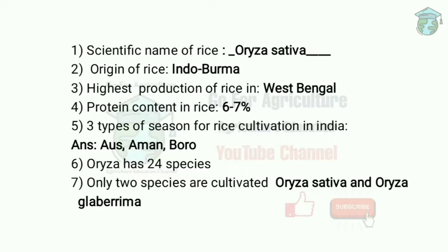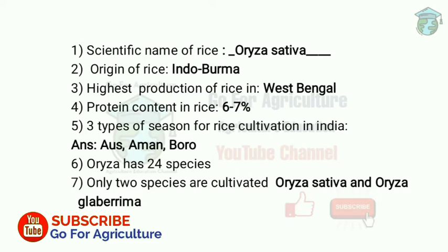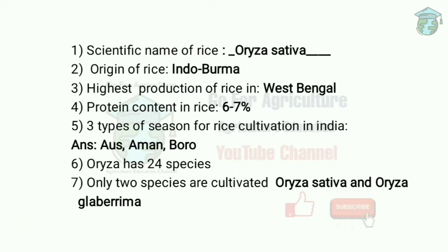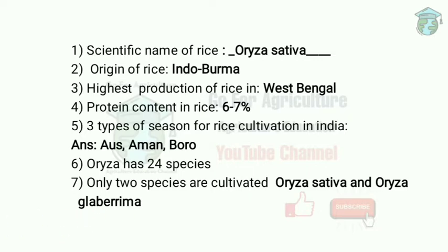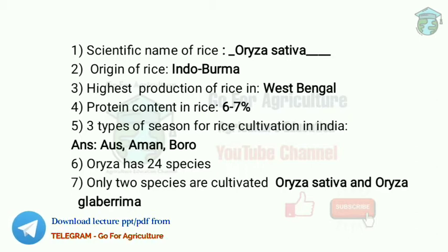Protein content in rice is 6 to 7 percent. Next question: what are the three types of season for rice cultivation in India? They are Aus, Aman, and Boro. Aus means autumn — the rice harvested in autumn. Aman means winter — rice harvested in winter. Boro means summer — the rice harvested in summer.